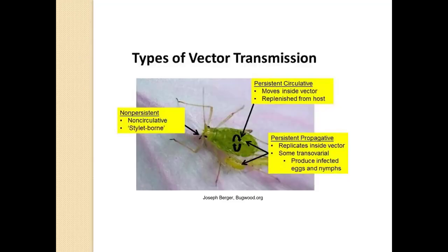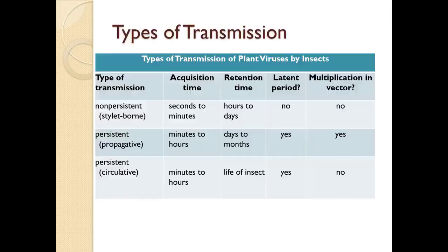Non-persistent viruses are stylet-borne — they don't get in and circulate around the body. Persistent circulative viruses move inside the vector and are replenished from the host. Persistent propagative viruses replicate inside the vector and can actually be passed on to eggs and nymphs.